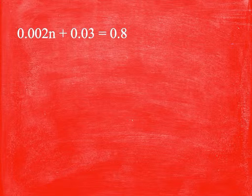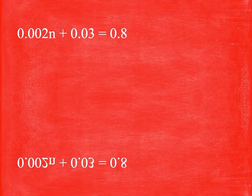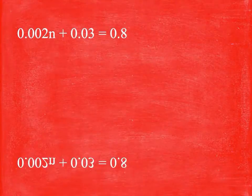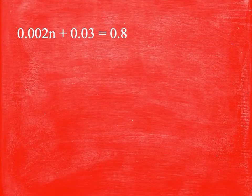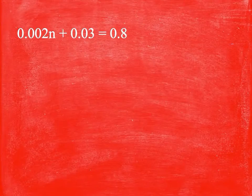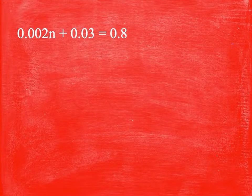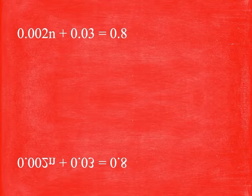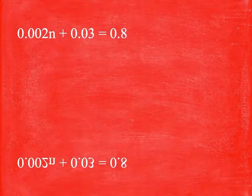Now it looks like I have a normal two-step equation. The numbers are just a little bit larger than we're used to. So I can subtract 30, subtract 30, and 2n is equal to 770. I then divide by 2, divided by 2, and n is equal to 770 divided by 2.